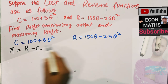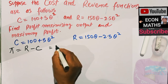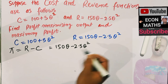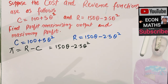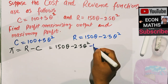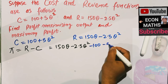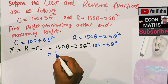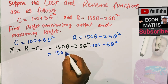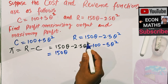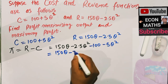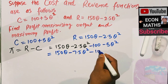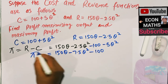The revenue function is given as 150q minus 2.5q squared. From this we subtract the cost function: minus 100 minus 5q squared. Solving, we have 150q, then minus 2.5q squared minus 5q squared, which comes out to be minus 7.5q squared, then minus 100. This is our profit function.